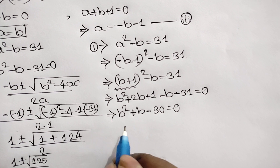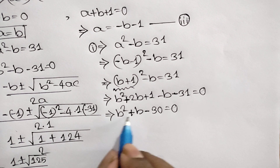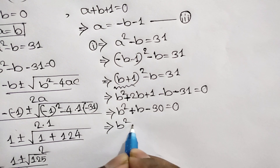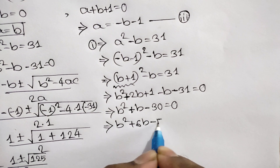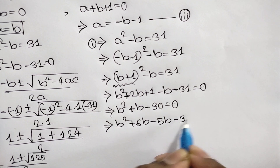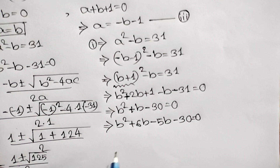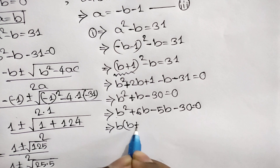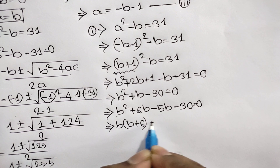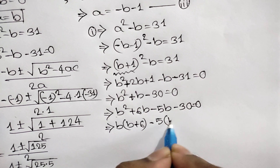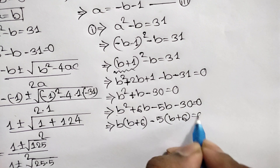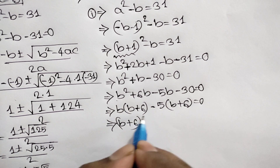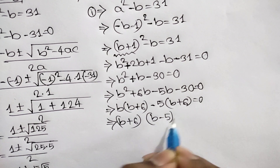Using the middle term breaking rule, we write B squared plus 6B minus 5B minus 30 equals 0. Taking common factor B from the first two terms gives B(B plus 6), and taking negative 5 from the last two terms gives negative 5(B plus 6) equals 0. Taking out the common factor (B plus 6) gives (B plus 6)(B minus 5) equals 0.